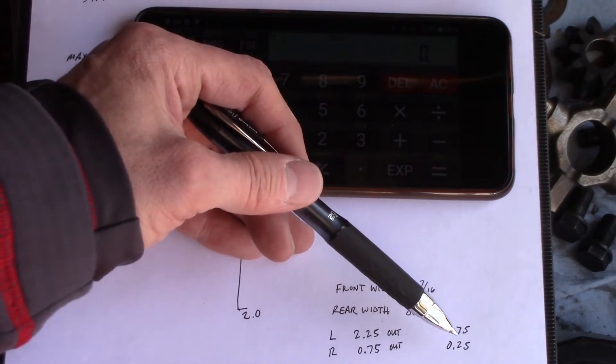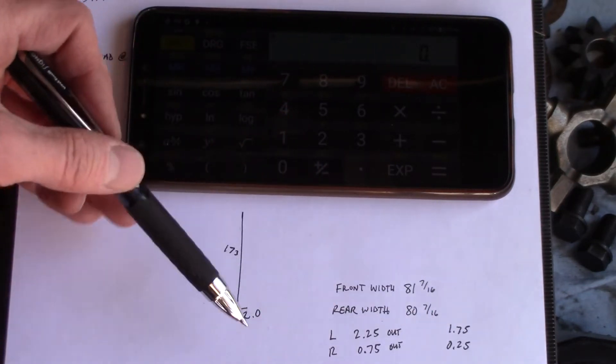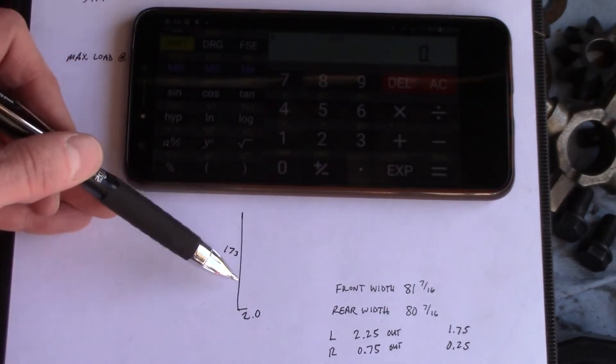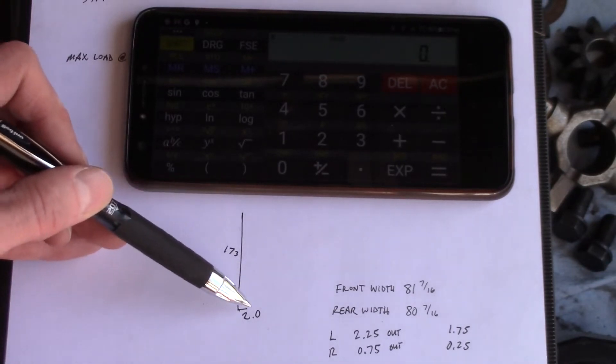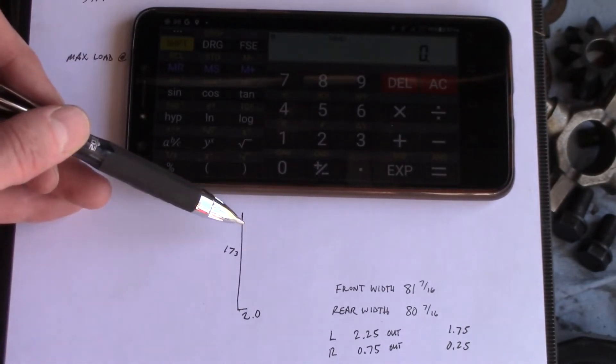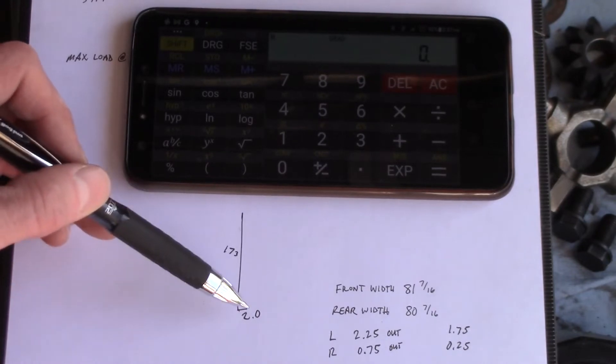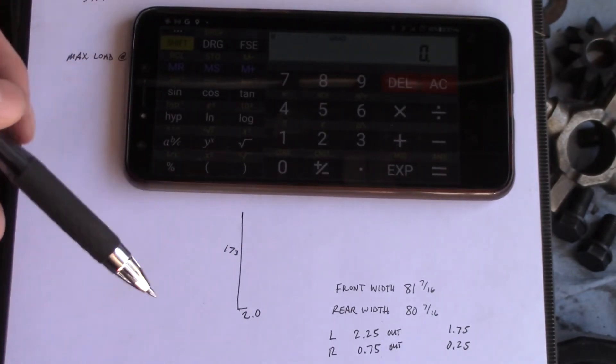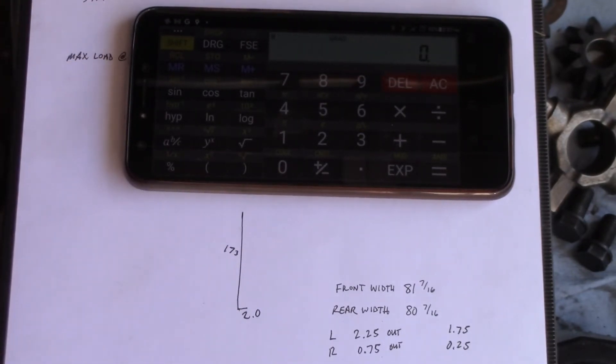So the total distance out is 2 inches. I've got a triangle, 173 on the long leg and 2 inches on the short leg. Since it's a very small angle, I don't care which side is 90 degrees because at very small angles, if you calculate the tangent of the angle or the sine of the angle, you're going to get the same thing.